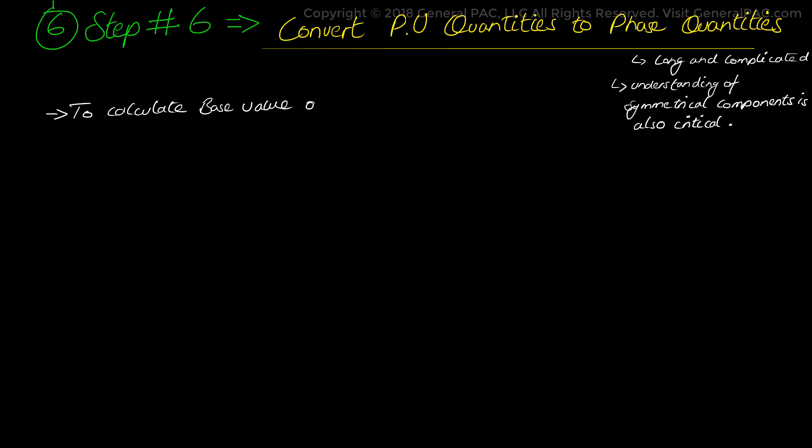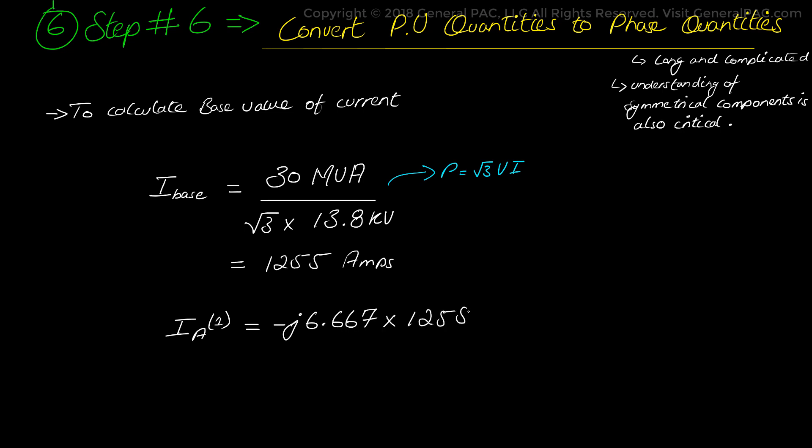To calculate the base value of current, we simply divide the base value of power which is 30 MVA with the voltage on the bus which is 13.8 kV and there's a square root of 3 factor there. Now this is very similar to a 3 phase power formula but solving for the current instead. Now the base value current is now 1255 Amperes. Now we just simply multiply the per unit values that we calculated earlier for the sequence component to the base value that we calculated here. And we get 8367 Amps at the angle of -90 degrees as the positive sequence current values in ampere quantities.